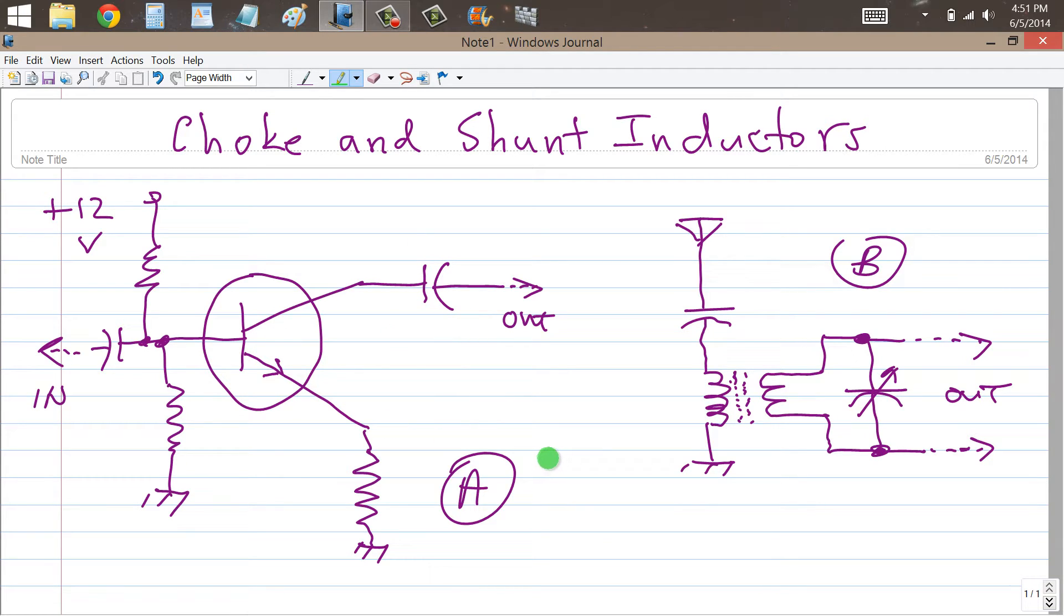Suppose this is a radio frequency amplifier operating at maybe 7 megahertz. We can use what we call a radio frequency choke, RFC. That's basically an inductor with a powdered iron core, probably on the order of maybe 10 millihenrys. That ought to be enough.